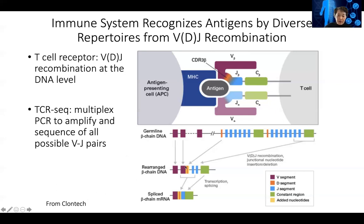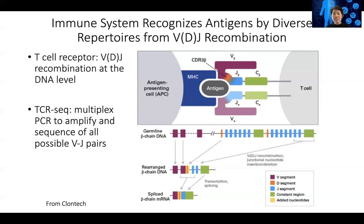VDJ recombination creates diversity not only through the combination of V, D, and J segments, but also through the stitching process itself. When you cut the DNA and try to stitch the pieces together, this stitching process is never perfectly accurate. At the stitching location, there can be small insertions, deletions, and mutations, which create additional diversity in the TCR. So every individual, even with just one VDJ segment from mom and one from dad, can theoretically create millions of different TCRs that recognize different antigens.